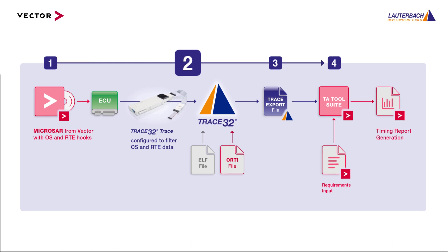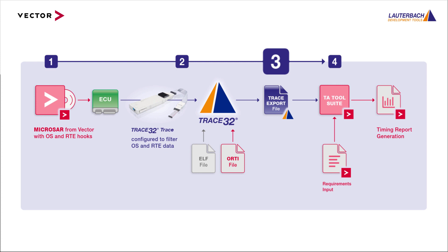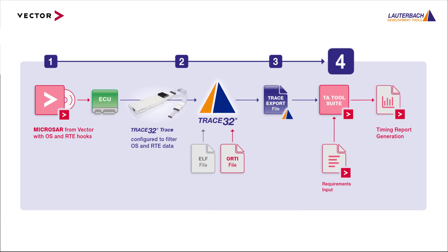The Tricore RX can be configured so that each write-to-memory generates a time-stamped trace message. These trace messages are then recorded by a Trace32 trace tool. After the trace information is recorded, it can be exported by Trace32 in a format that is readable by the TA tool suite. Imported into the TA tool suite, this information can be analyzed and validated against the system requirements.